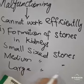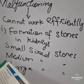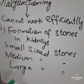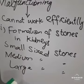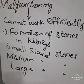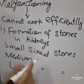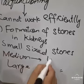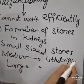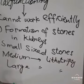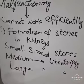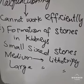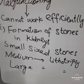Medium sized stones are removed by a process known as lithotripsy. In this method, sound waves are used from outside of the body. These sound waves break the stones into small pieces, which are then passed out of the body through urine.